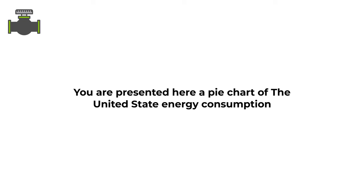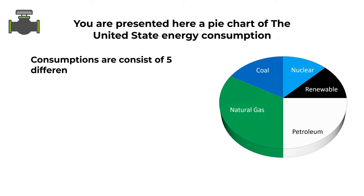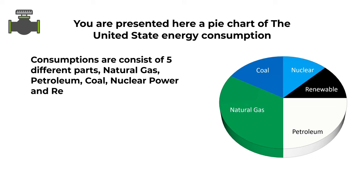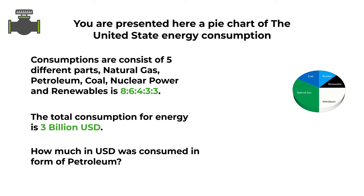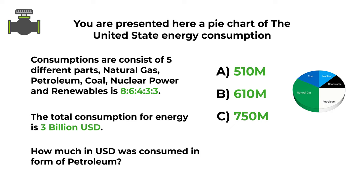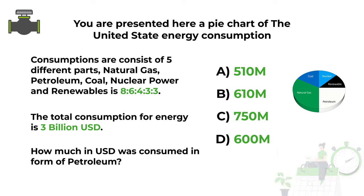Here's a practice question. You're presented with a pie chart of U.S. energy consumption with five parts: natural gas, coal, nuclear, renewables, and petroleum. The ratio is 8:6:4:3:3, with total consumption of $3 billion. How much was consumed as petroleum? Choices: A: $510M, B: $610M, C: $750M, D: $600M. Post your answer in the comments.